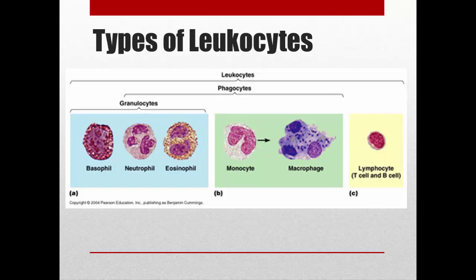The granulocytes — basophils, neutrophils, and eosinophils — are named as such because they have little granules in their cytoplasm that are visible when we look at them under a microscope. Monocytes and lymphocytes don't have that.